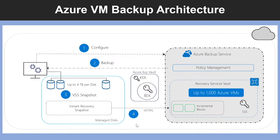In the background, the snapshot is compared to a snapshot of a previous recovery point and moves only the incremental blocks via HTTPS into the recovery services vault. The recovery services vault has encryption enabled via server-side encryption, so the backup is encrypted at rest and is protected while in transit.